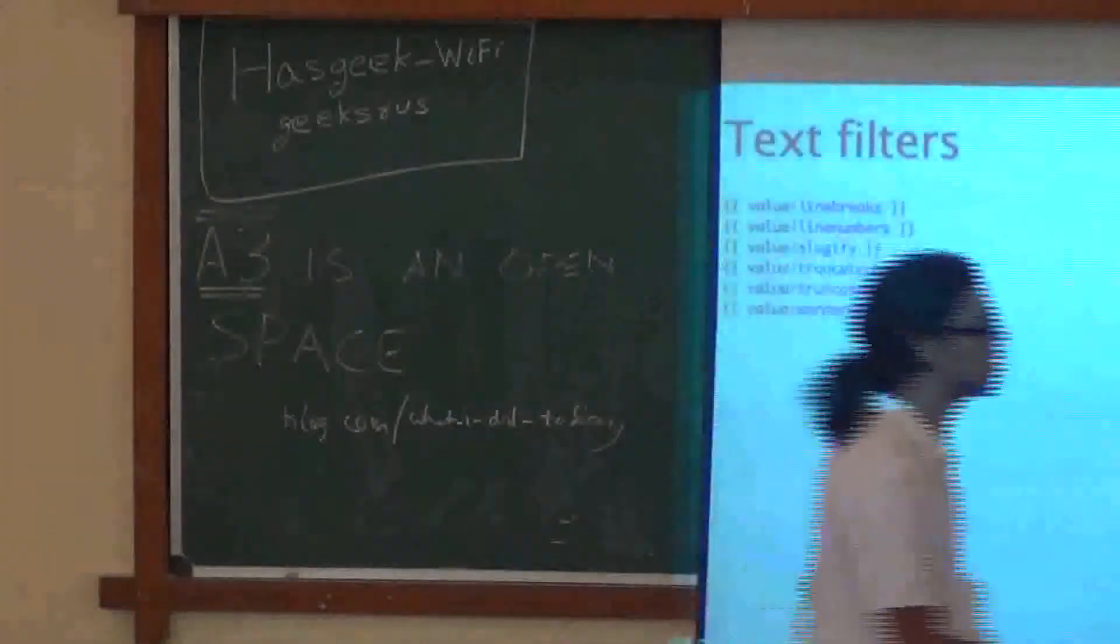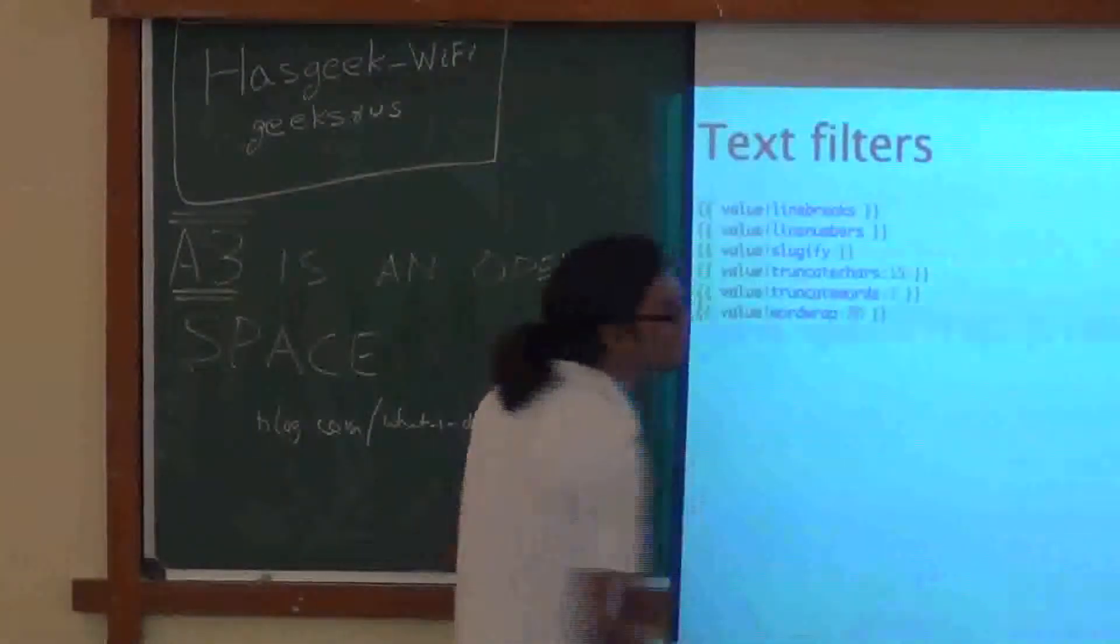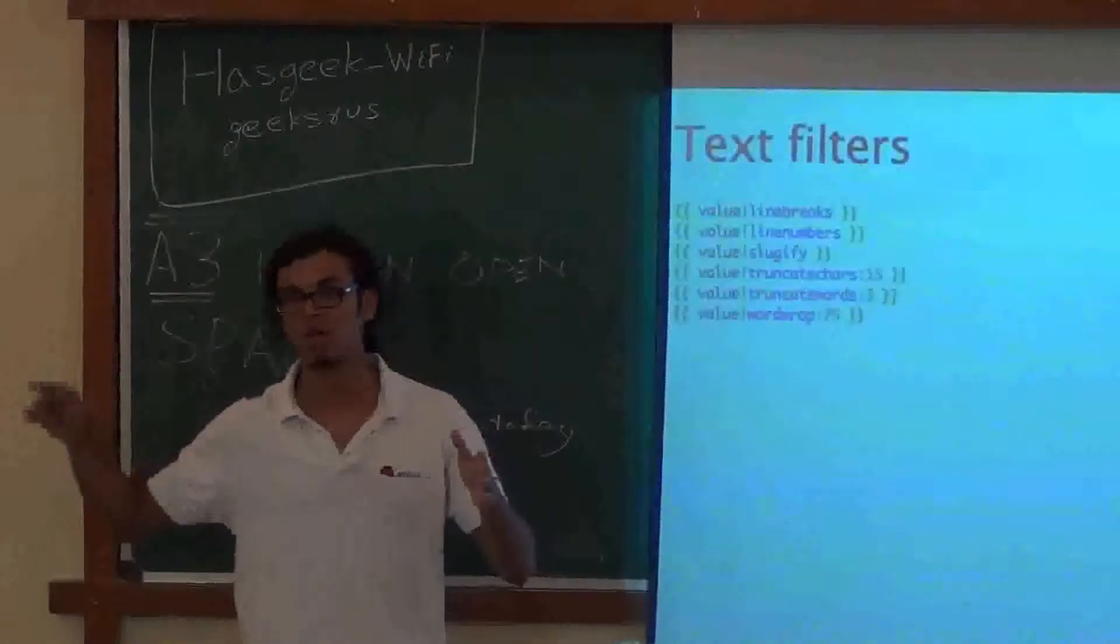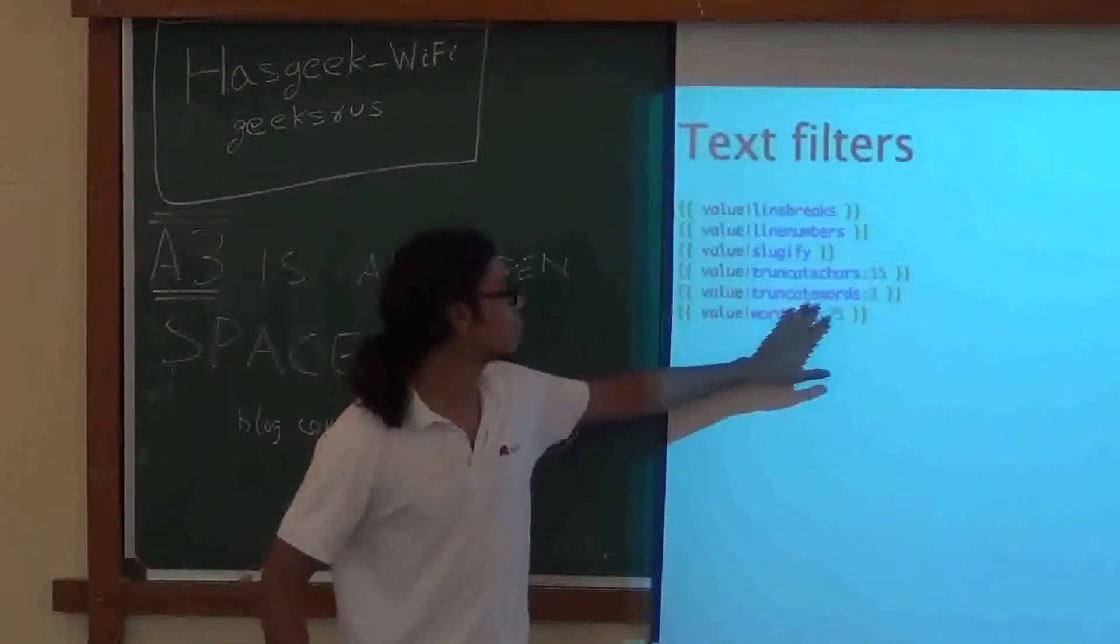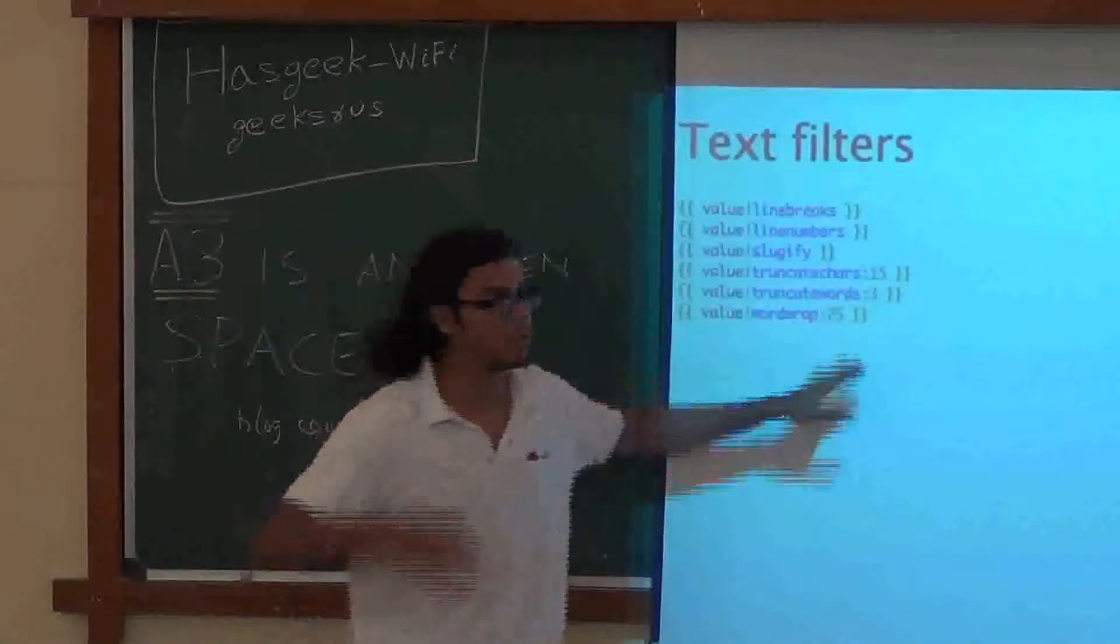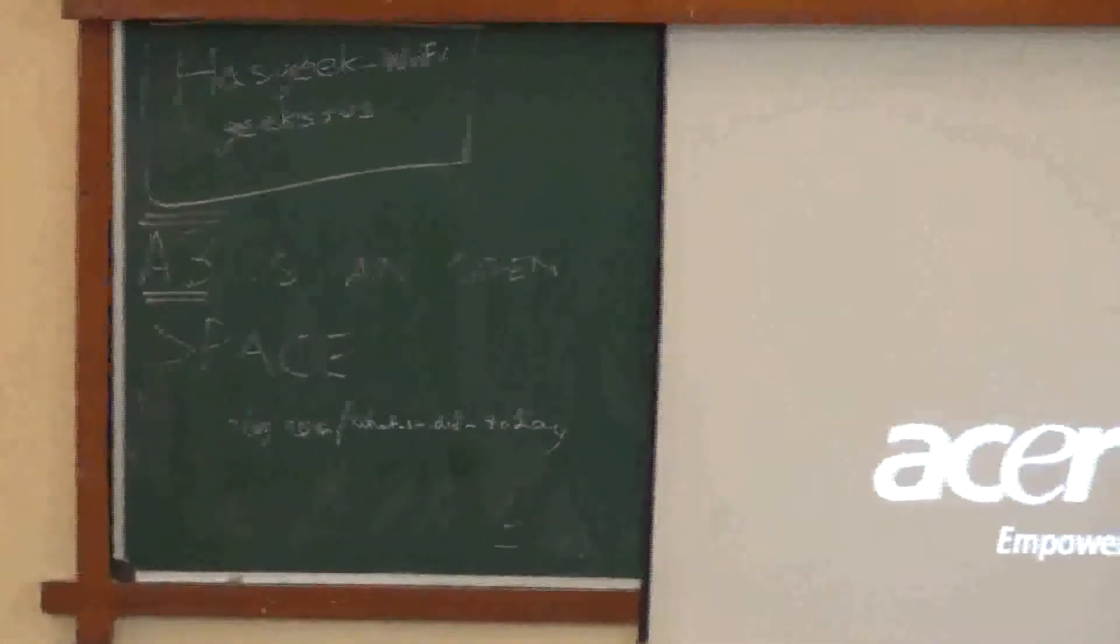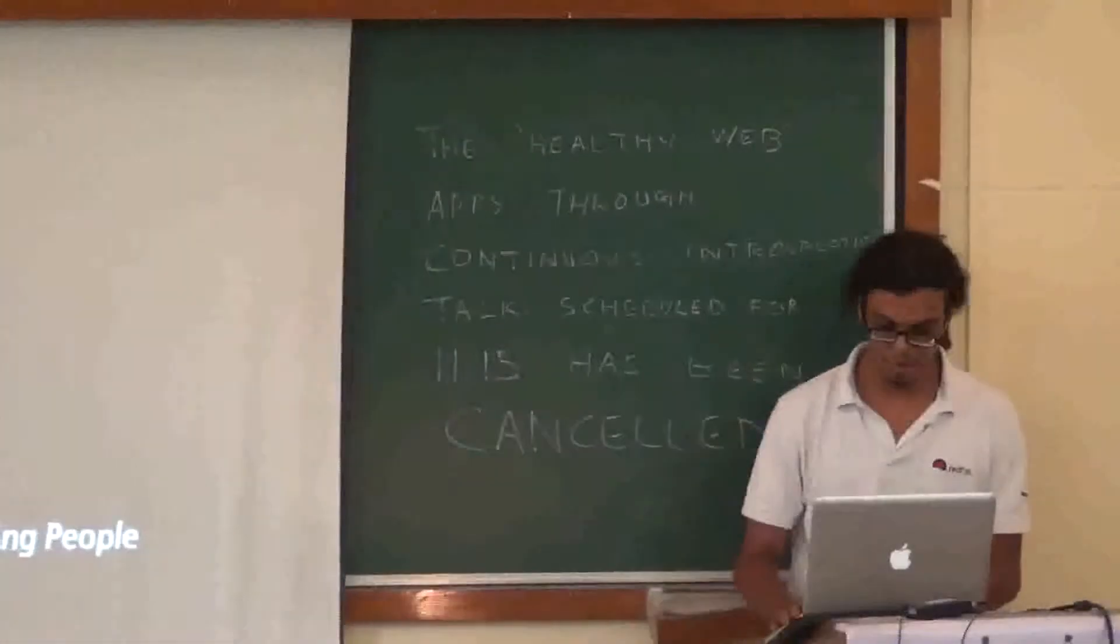Truncate characters is, I think you know, what it does. It takes 15 as a value. So at 15, it cuts the top and puts the dot dot dot, ellipsis. Truncate words does the same thing, but with words. And word wrap will wrap your entire text into the number of characters you specify.